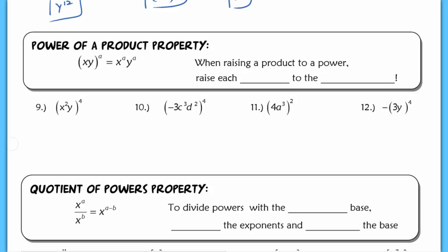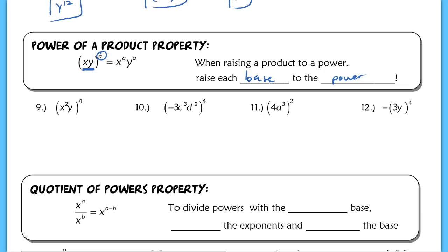For your next rule, the Power of a Product property: when you see two different bases on the inside and an exponent on the outside, you need to make sure you distribute that exponent to each base. When raising a product to a power, you raise each base to the power. In number nine, I distribute and multiply: x to the eighth power — two times four is eight — and y to the first becomes y to the fourth.